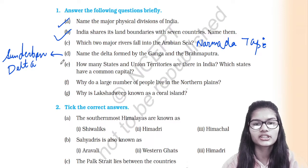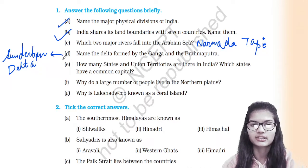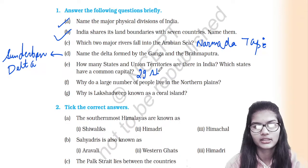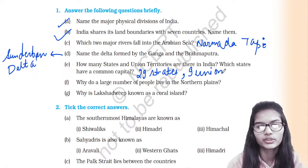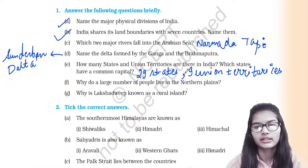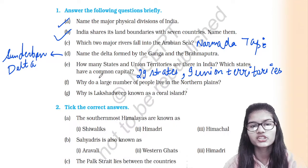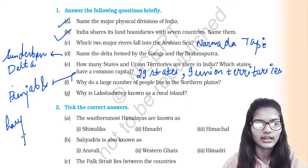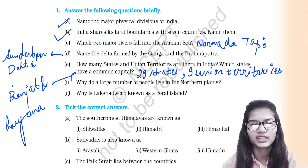Question: how many states and union territories are there in India, and which states have a common capital? In total, India has 29 states and 9 union territories. As for states that share a common capital, that is Punjab and Haryana — they share the same capital.